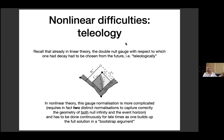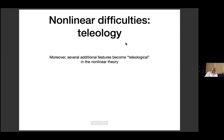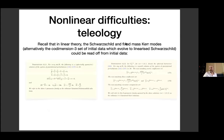Bootstrap arguments are not only the way we understand stability problems, we also use them for large data problems. There are additional features that enter in this teleology in nonlinear theory. In linear theory, the linearized Kerr and Schwarzschild solutions could be identified at the level of initial data, but in nonlinear theory — much like the teleological gauge, which already in linear theory cannot be explicitly seen in initial data — you also have to understand these solutions teleologically.